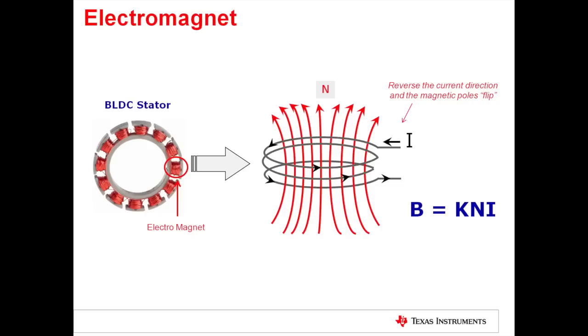Now one of the really cool things about an electromagnet is you can change the polarity by simply reversing the direction of the current. So in this example we've got current entering at the top and it's generating a north pole at the top of the electromagnet. If I were to reverse that current direction, basically have the current exiting at the top, I would generate a north pole at the bottom of that electromagnet.